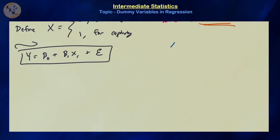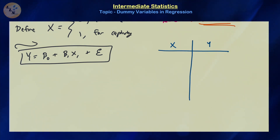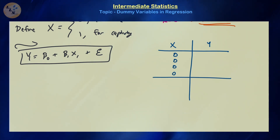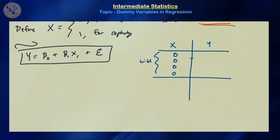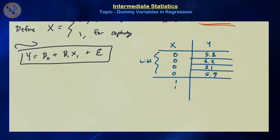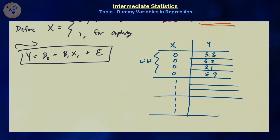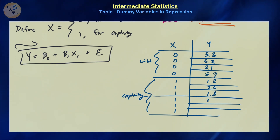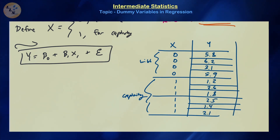For wild squirrels (x = 0), we sample four squirrels with average lifespans of 5.8, 6.2, 3.1, and 5.9 years. For captivity squirrels (x = 1), we sample six squirrels with average lifespans of 1.2, 2.6, 1.8, 2.5, 1.4, and 2.1 years.